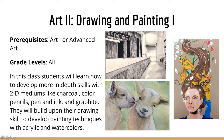So what is Art 2, Drawing and Painting 1 about? The prerequisites are Art 1 or Advanced Art 1 and it is an all grade level class. Students will learn how to develop more in-depth skills in 2D mediums like charcoal, colored pencils, pen and ink, and graphite, and will build upon drawing skills to develop painting techniques with acrylics and watercolor. We do perspective drawings, more creative portraits, and fun pen and watercolor techniques.